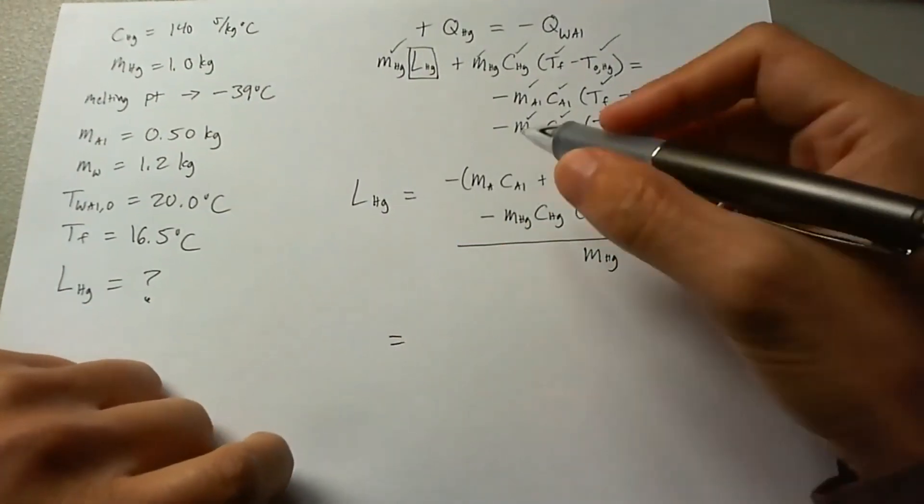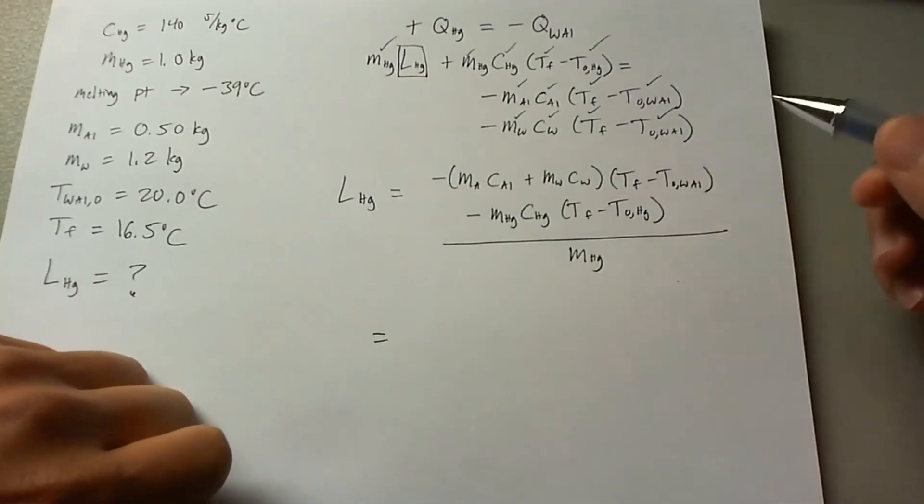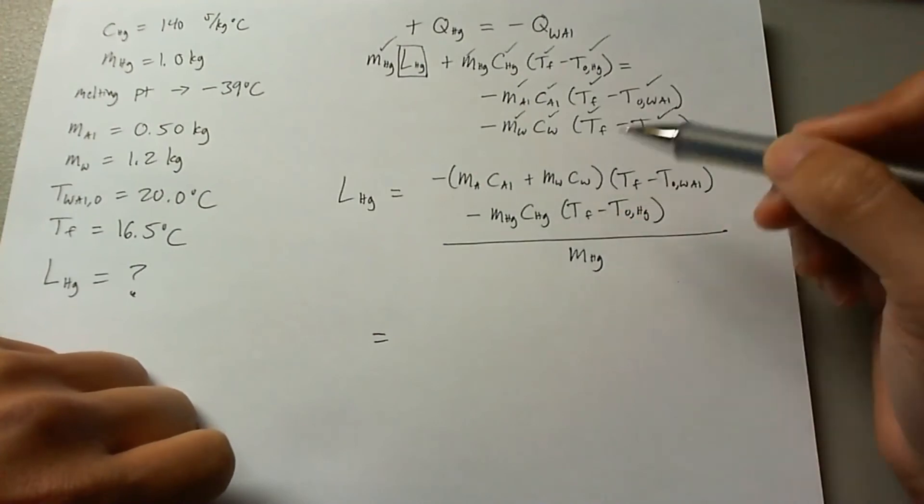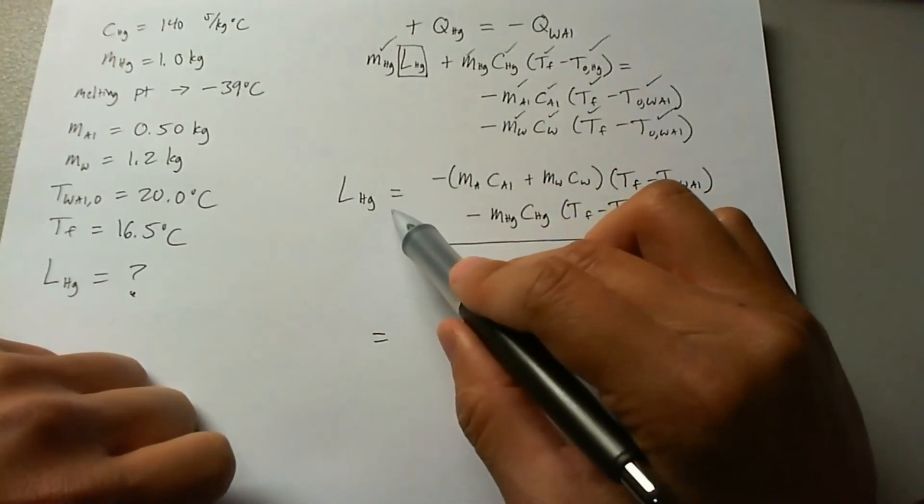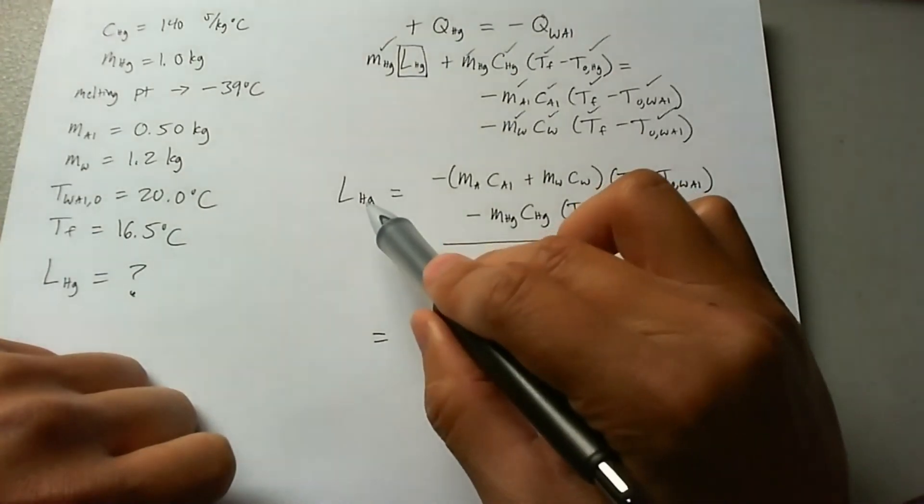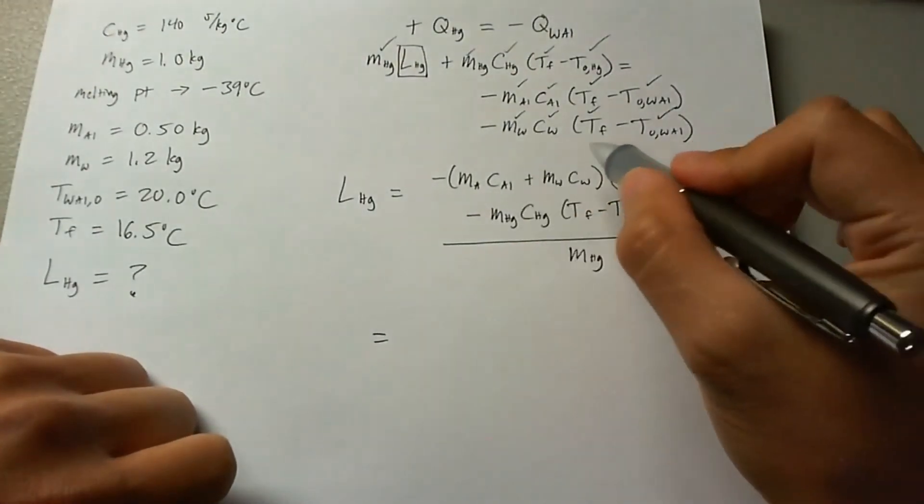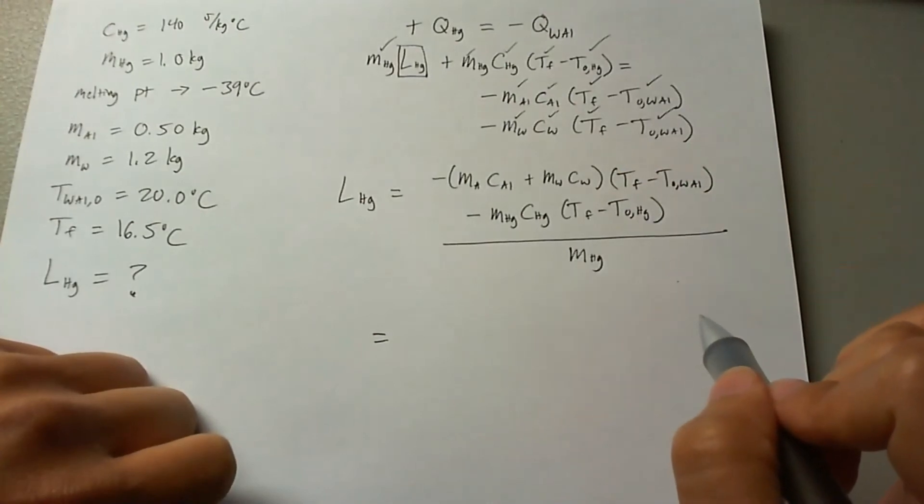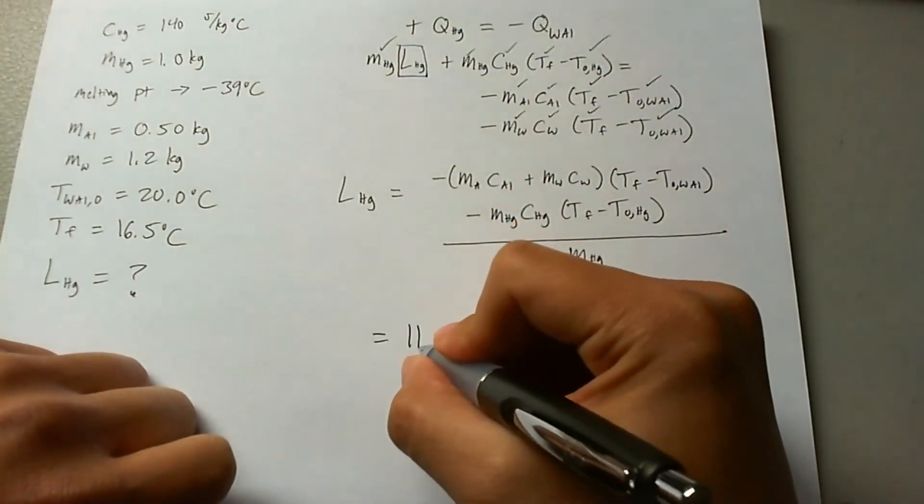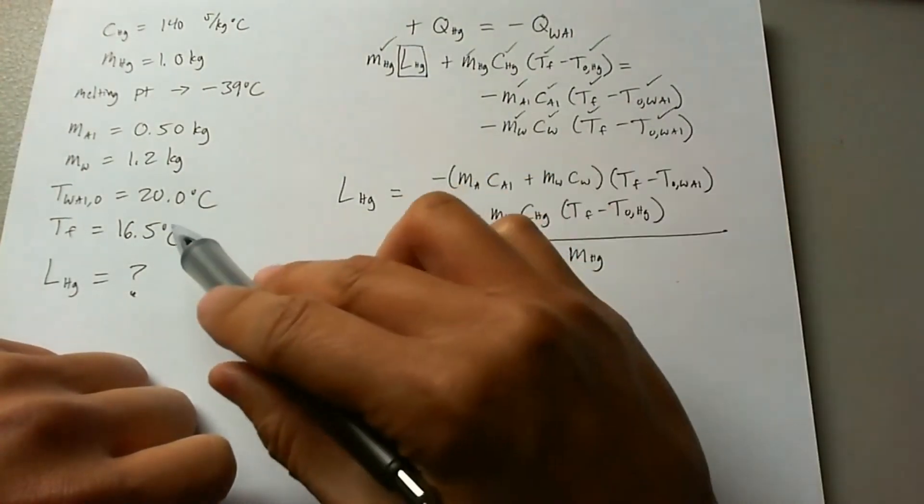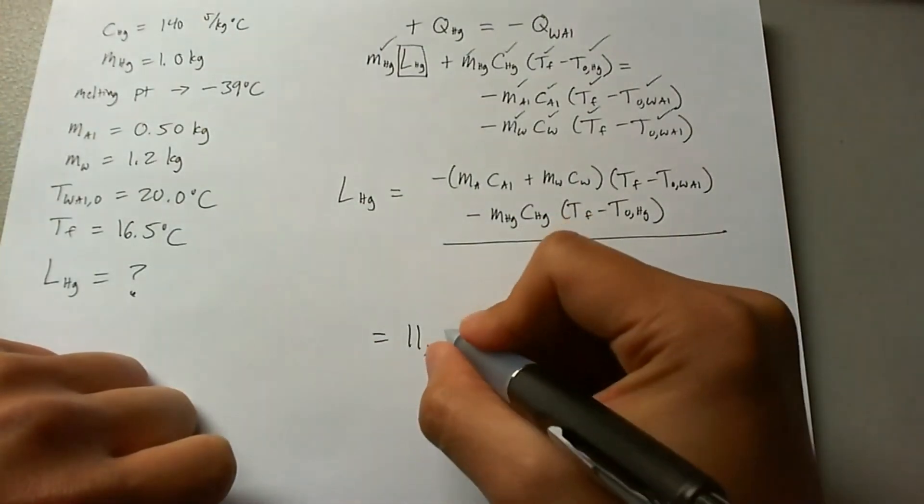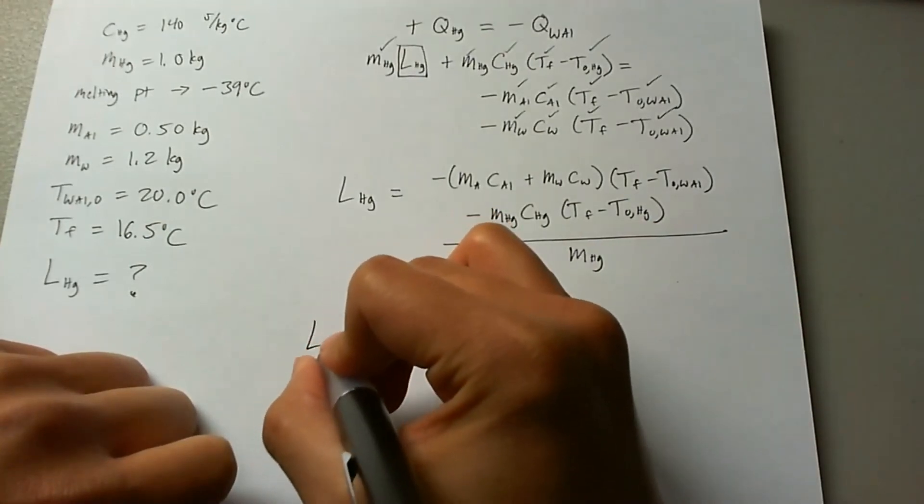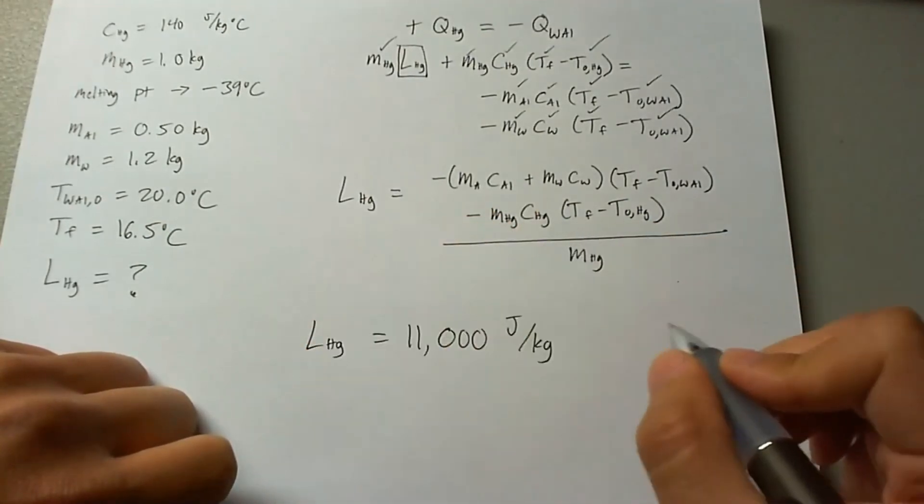If you want to analyze units, the units should all play out to where the heat capacity ends up giving you a value in joules per kilogram. So this would all be in joules, and then this is a kilogram unit down on the denominator. The final value, if you do the calculation and plug in all the numbers, would be 11,000 joules per kilogram. And that ends up being the latent heat of fusion for mercury.